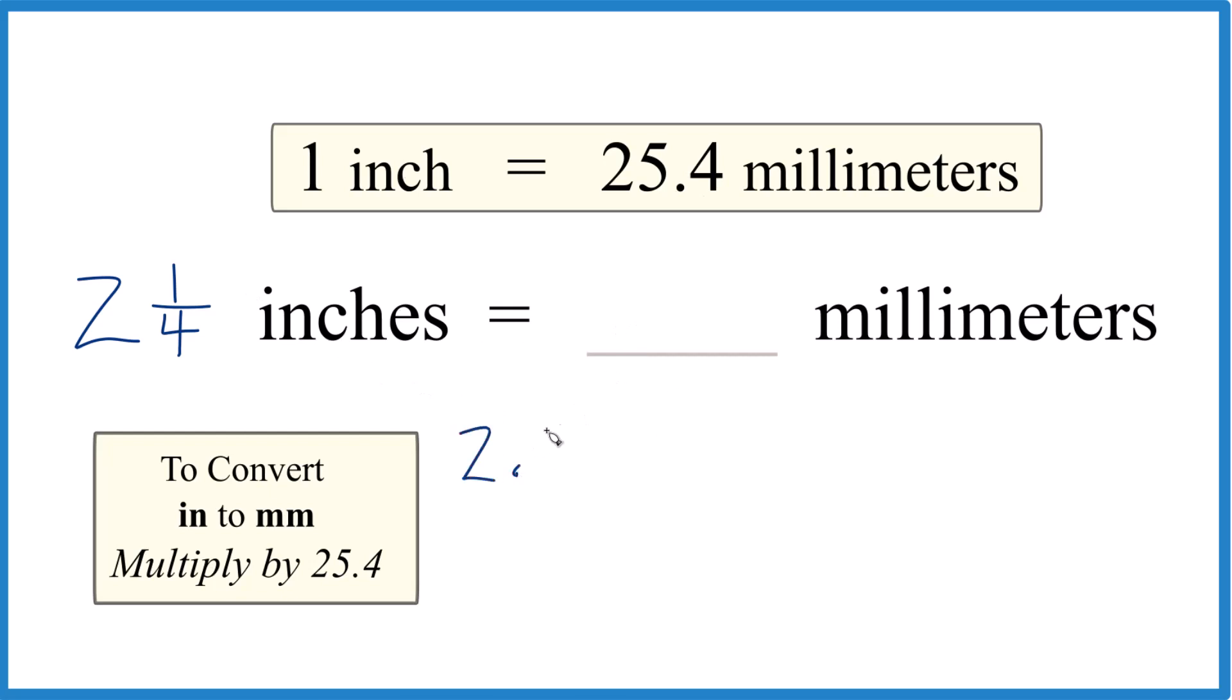We're going to take 2.25 inches and multiply it by 25.4. When we go from inches to millimeters, we just multiply by 25.4, and that's not surprising because one inch equals 25.4 millimeters.